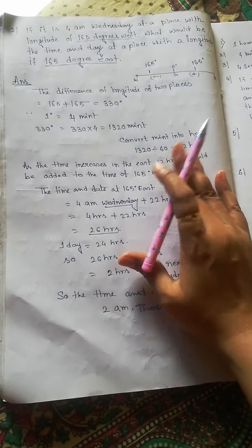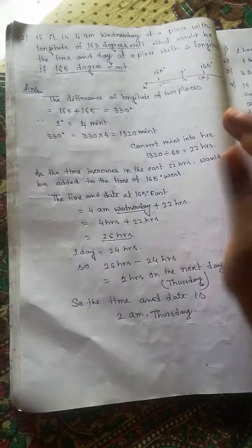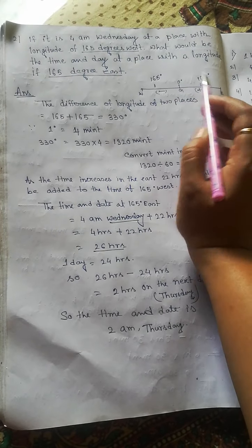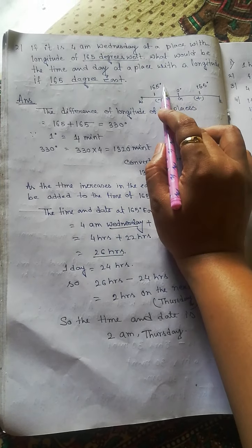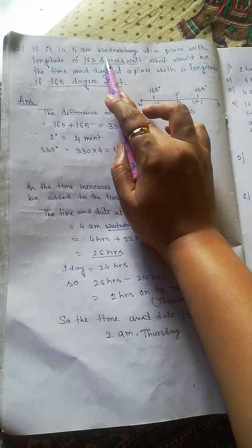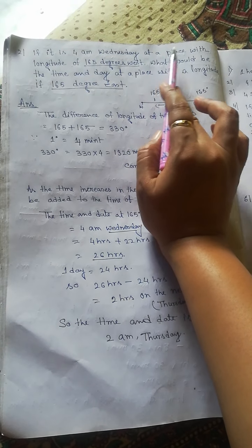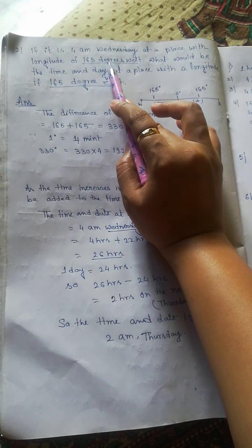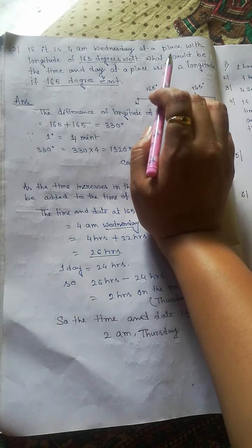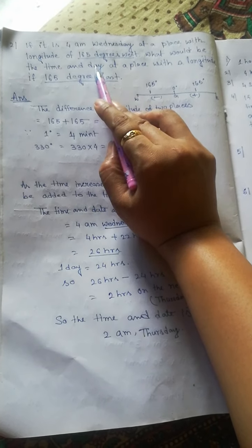Okay, here I'm giving you another example that is from two opposite hemispheres. If it is 4 AM Wednesday at a place with longitude of 165 degrees West, what would be the time and day at a place with the longitude...